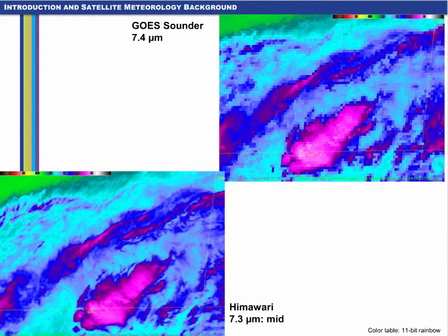Along the same lines, we make a comparison between the GOES Sounder 7.4 micron band and the Himawari 7.3 micron band in the same color table. The wavelengths between the two channels are quite close. However, we still have the issue of Himawari being near the limb, thus at reduced resolution particularly at the eastern edge of the scene. In this comparison, the improvements are obvious since the resolution of Himawari is 2 kilometers and the GOES Sounder is about 10 kilometers. This improvement will be comparable for GOES-R as well.